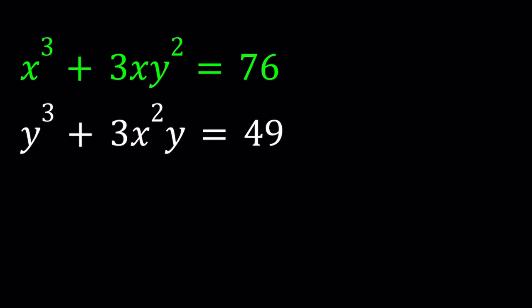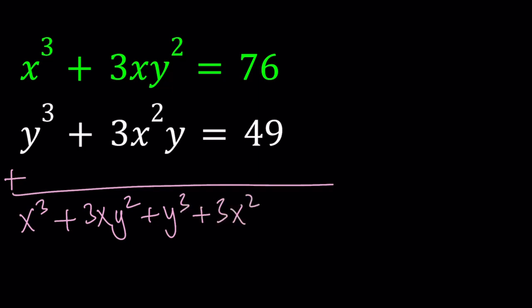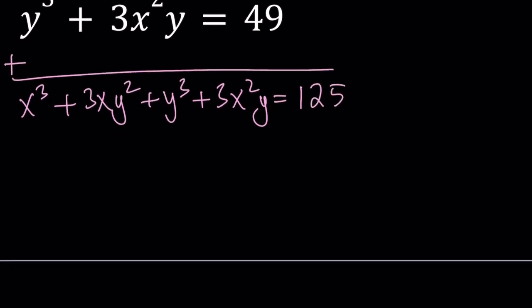I'm going to present the solution and then show you a graph which looks pretty interesting. Let's solve this system. First, you probably noticed that when these terms are all put together, they're going to make up something nice. We're going to use the binomial theorem by adding these two equations side by side because that's going to give us x cubed plus 3xy squared plus y cubed plus 3x squared y equals 76 plus 49 which is equal to 125.